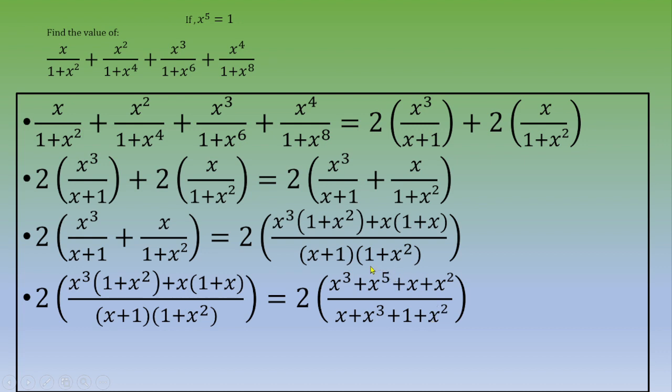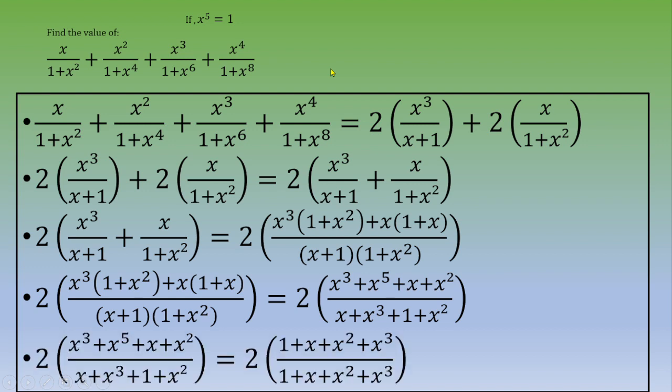We know that x power 5 is 1. So we end up with 2 times 1 plus x plus x squared plus x cubed, over 1 plus x plus x squared plus x cubed.